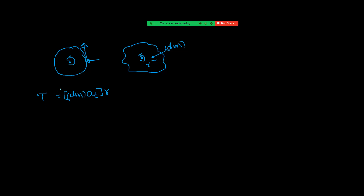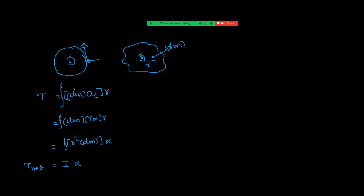We consider each and every point mass due to external forces. Integrating: torque = ∫ dm × R·α × R = ∫ R² dm × α. We know that ∫R² dm is the moment of inertia I of the rigid body about that axis. So torque = I × α.